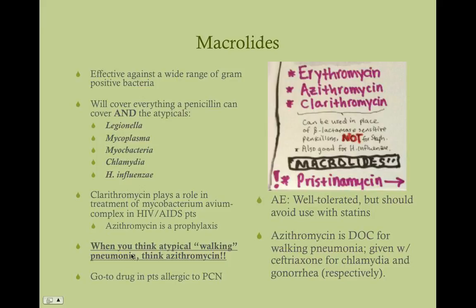If you think a patient has atypical pneumonia, give them azithromycin. Atypical pneumonia presents in younger patients with dyspnea, nonproductive cough, and on chest X-ray you see patchy infiltrates throughout the entire lung field rather than lobar consolidation — a pneumonia that looks worse than it really is, and these patients usually aren't as sick. Macrolides are the go-to drug in patients allergic to penicillin. Adverse effects: generally well-tolerated, but avoid macrolides in patients on statins because it can increase muscle breakdown.